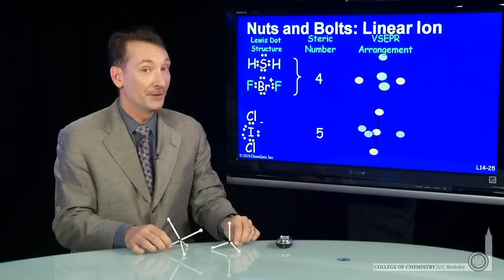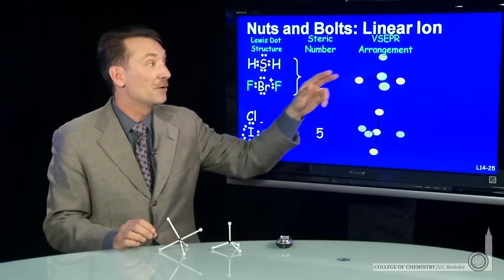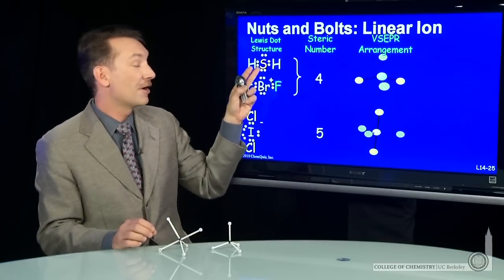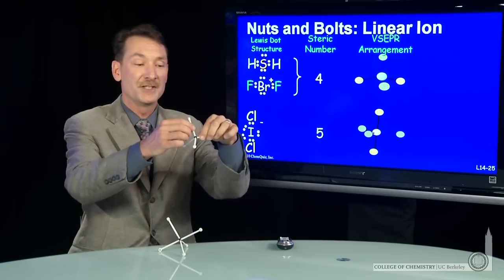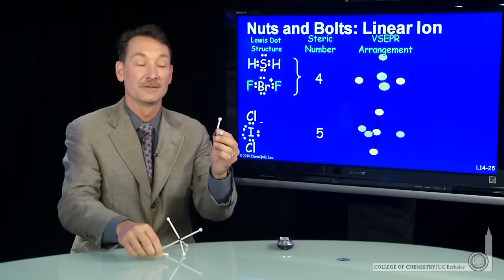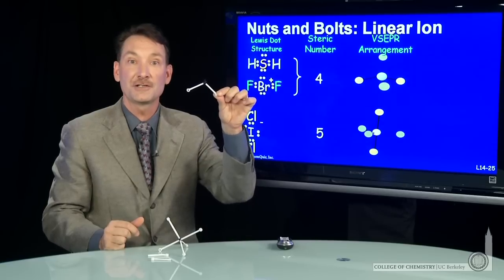But remember, when we're talking about the actual molecular geometry, we ignore the lone pairs. So for these two molecules here, there are two lone pairs. So you have the tetrahedral geometry, but it's as if you're going to ignore two of the arms. If you ignore two of the arms, you get a molecule that just looks bent.